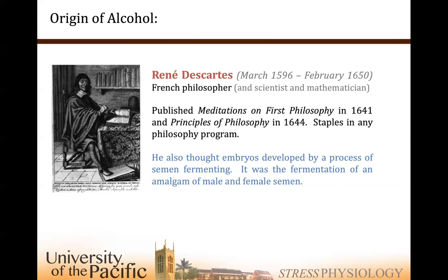My favorite importer is Kermit Lynch in Berkeley — he imports mostly French wine, some Italian, and avoided the Californianization of wine: tons of alcohol, higher percentage than there should be because you chapitalize — throw a bunch of sugar in there and allow it to ferment in addition to the natural sugar in the grapes. You need a fruit bomb — 15 and a half percent alcohol, still sweet. Throw some oak bark chips in. That's the Robert Parker model of wine, which took over most of the world.